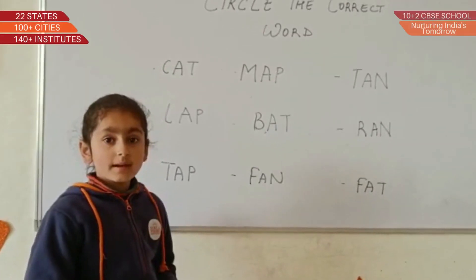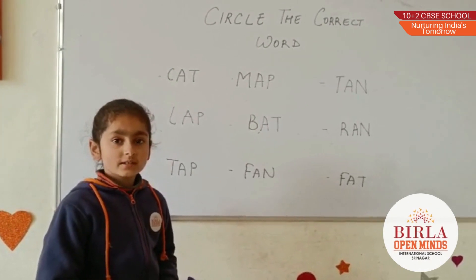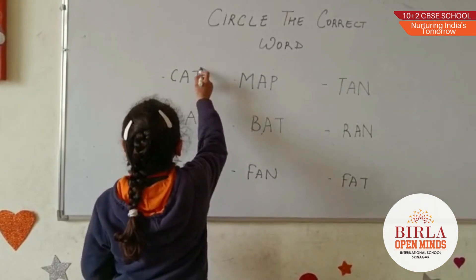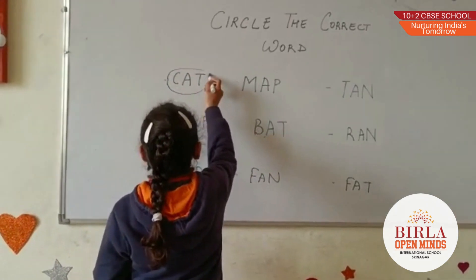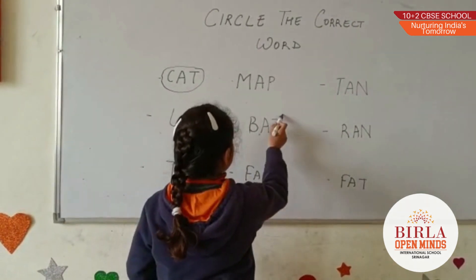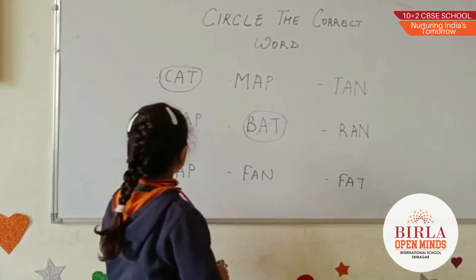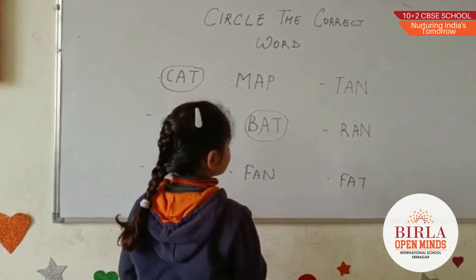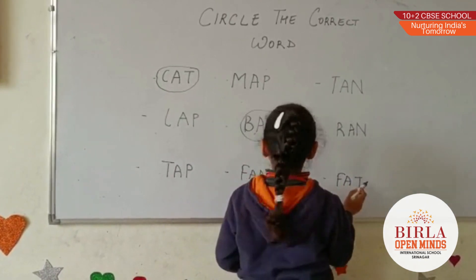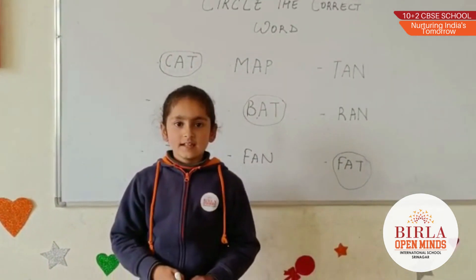Good morning, Ayat. Good morning. What activity are we doing today? Circle the correct words. Okay. Can you circle AT family words? Yes, sir. T-A-T-T. Very good. Next. T-A-T-T. Very good. Next. T-A-T-T. Very good. Thank you, Ayat.